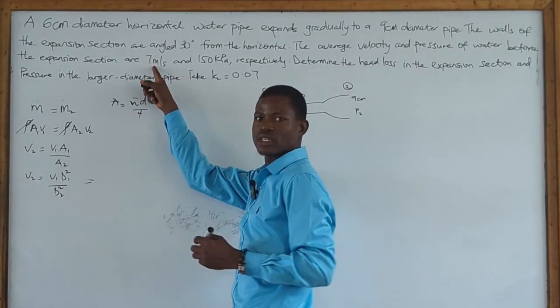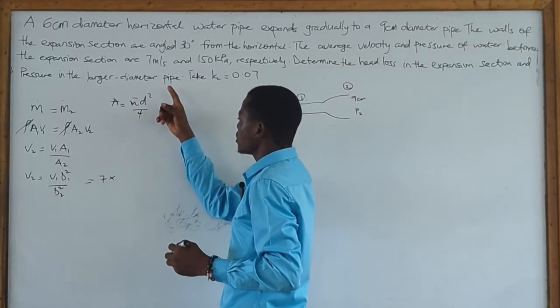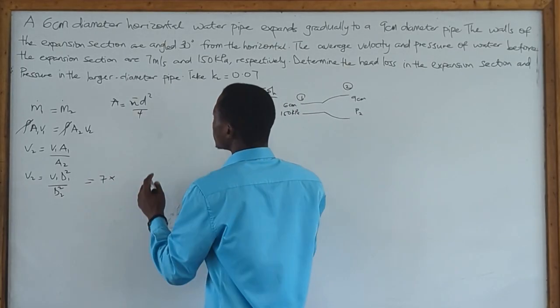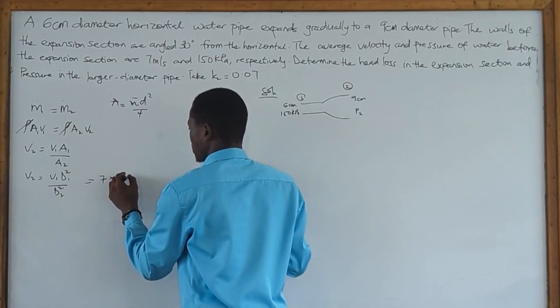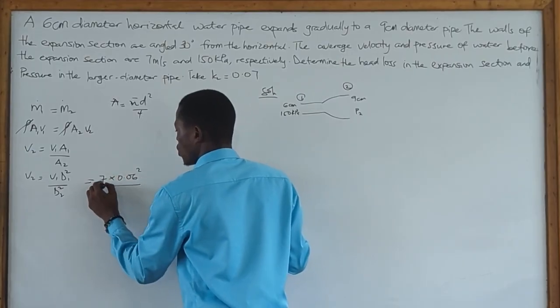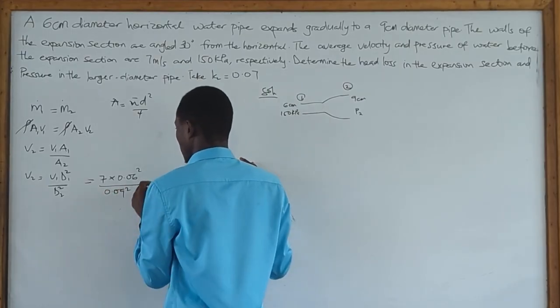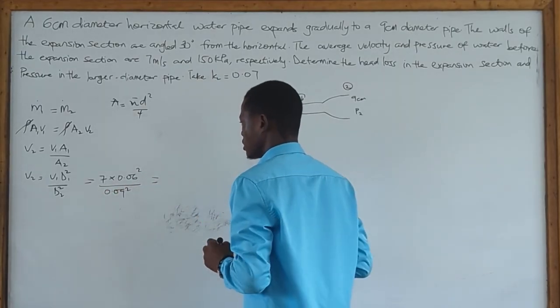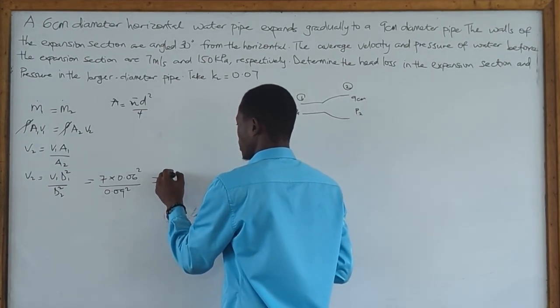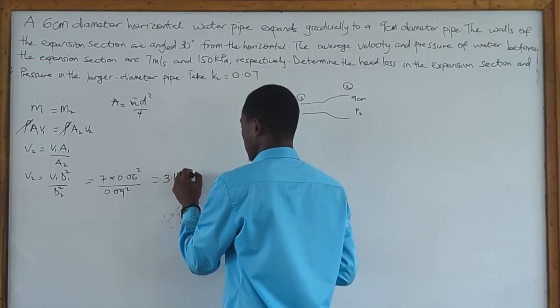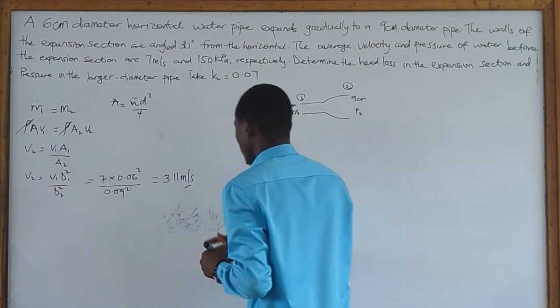Let's put in our values. We know our V1 to be 7, so 7 times the diameter, which is 0.06 squared, all over 0.09 squared. And this is going to give us a velocity of 3.11 meters per second.